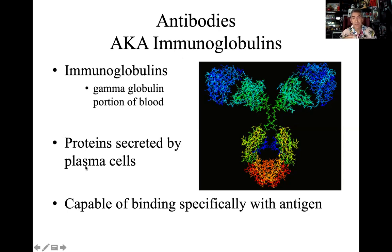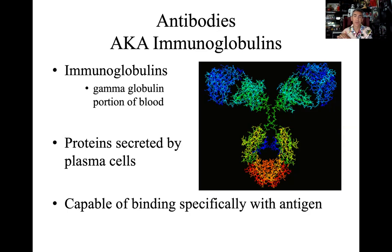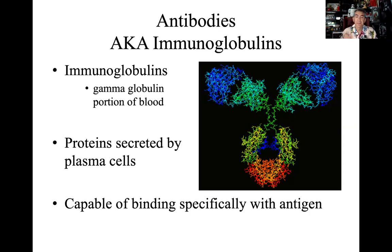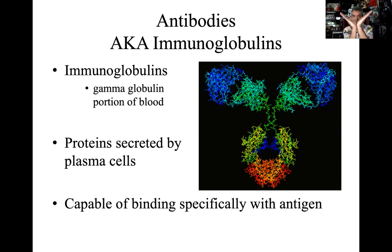We need to keep a distinction between the aqueous component of blood — the plasma itself — and the actual plasma cells, which are derived from activated B cells. The plasma of blood is that 55% component, while plasma cells are essentially little factories secreting antibodies. This picture shows the generic Y shape — almost like a triangular Y — which is the generic shape for an antibody.